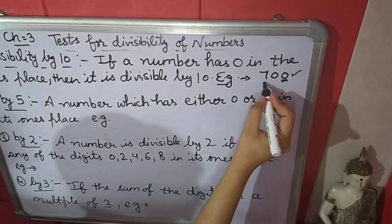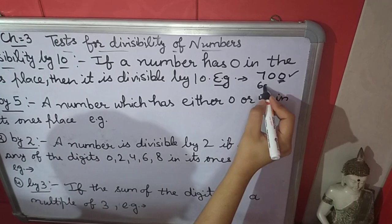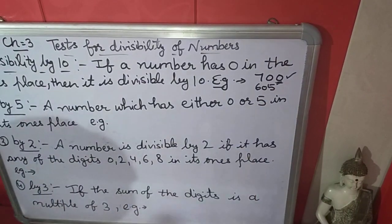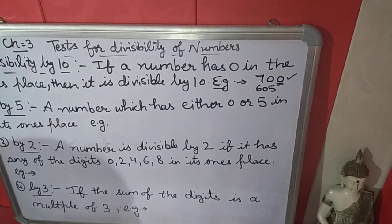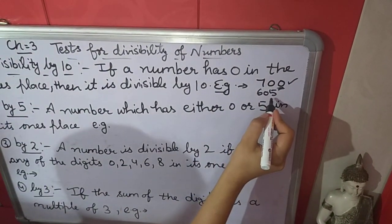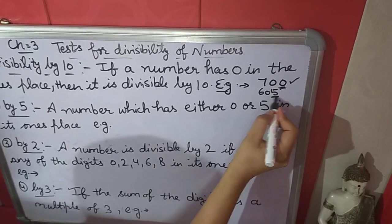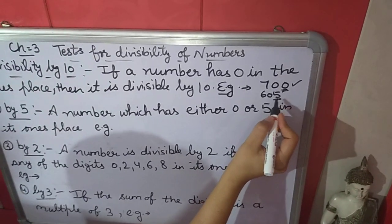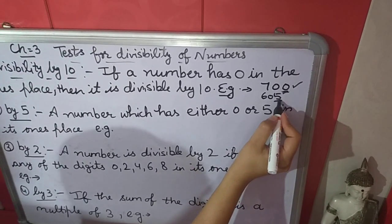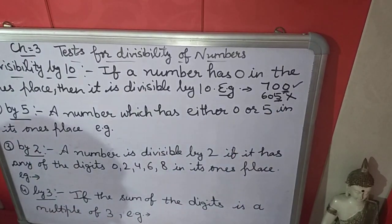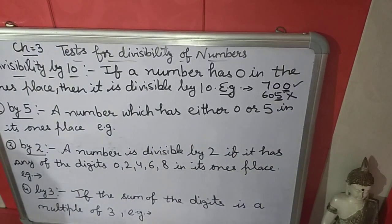For example, if 700 is given and you have to find whether 700 is divisible by 10 or not, without dividing. In this number, 0 is in the 1's place, so according to the rule it is divisible by 10. If there is written 605, we check the 1's place number — that is 5. It is not 0, so it is not divisible by 10.